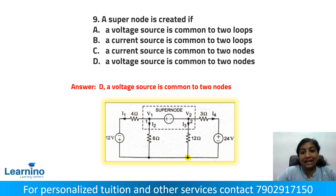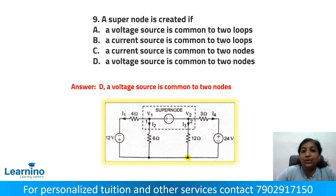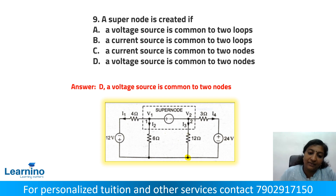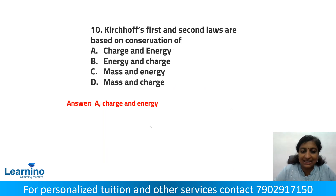Question number 9: When is a super node created? A super node is formed when a voltage source is common to two nodes. Two nodes sharing a voltage source are combined into a super node. The correct answer is option D.